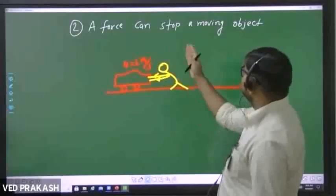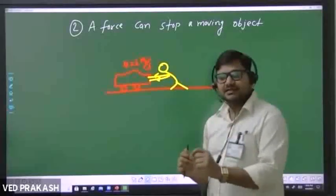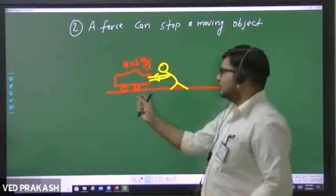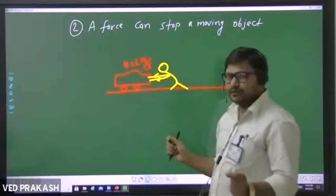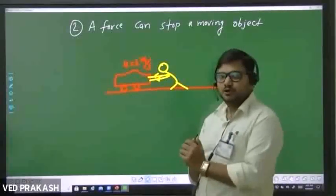A force can stop a moving object. If an object is initially at rest, then by applying force, you can make that object move. And if that object is initially moving with some velocity, then by applying force, you can also stop that object.